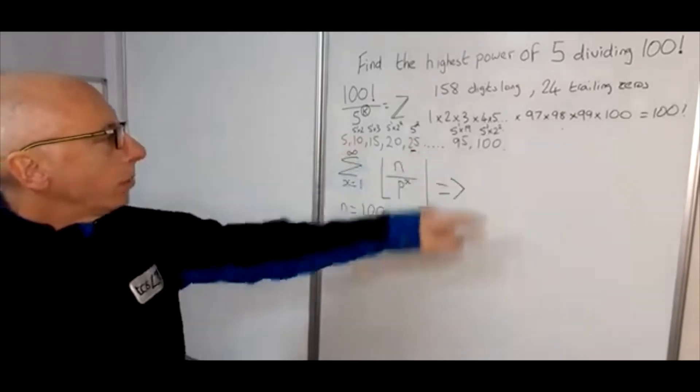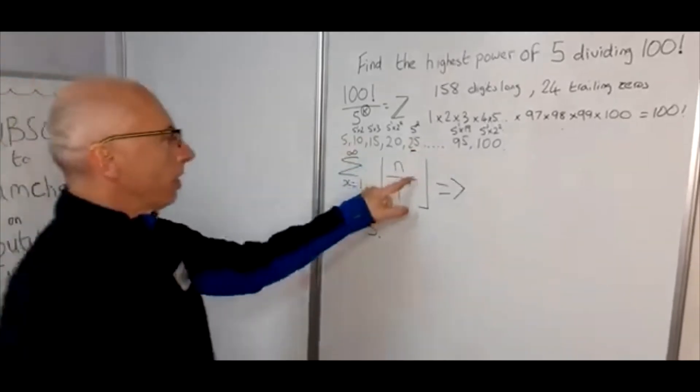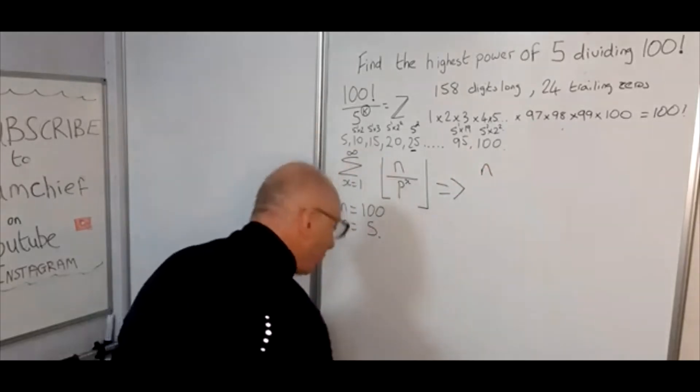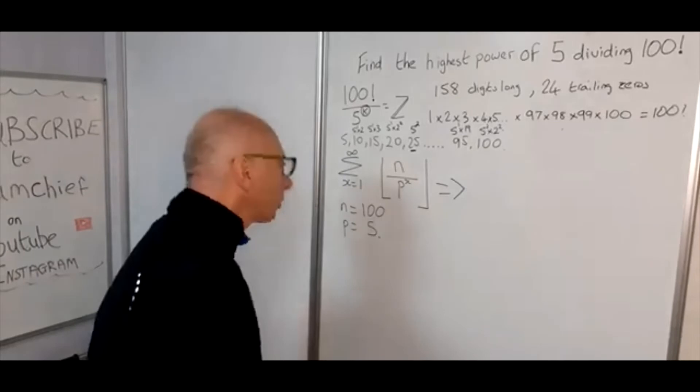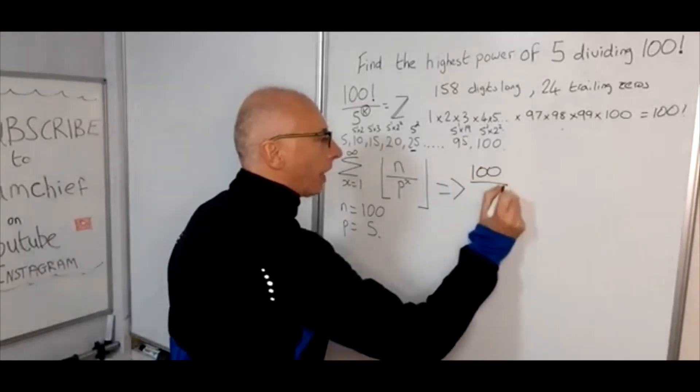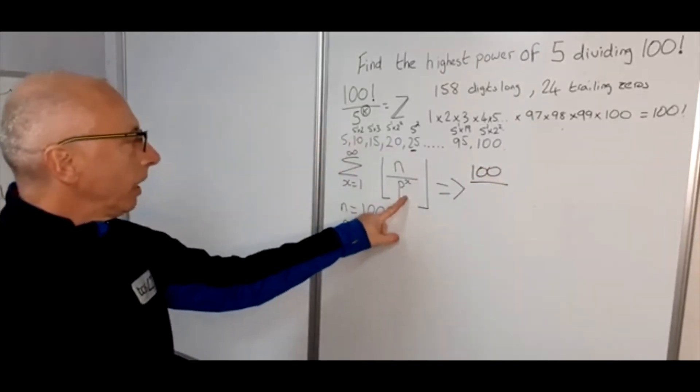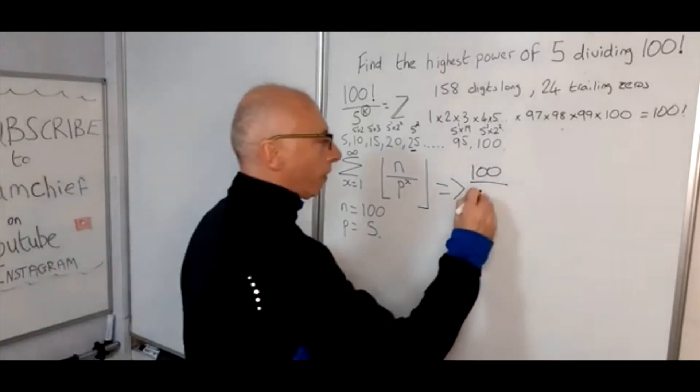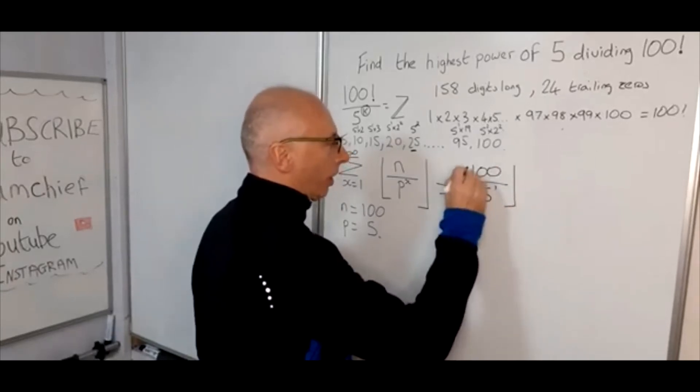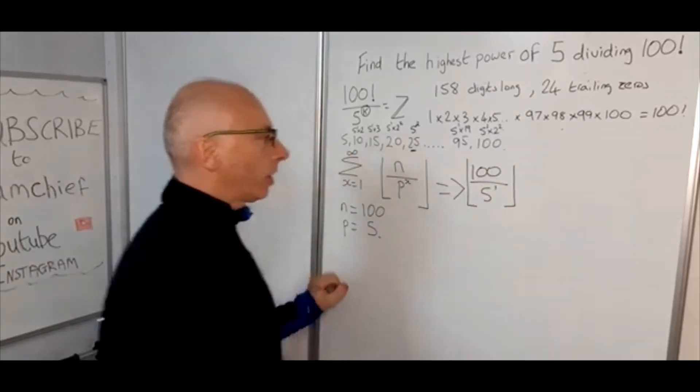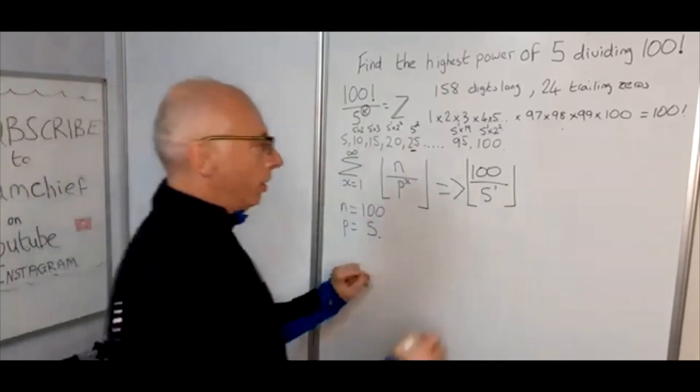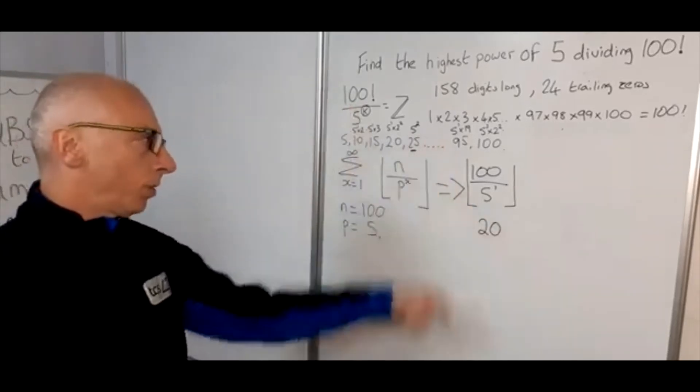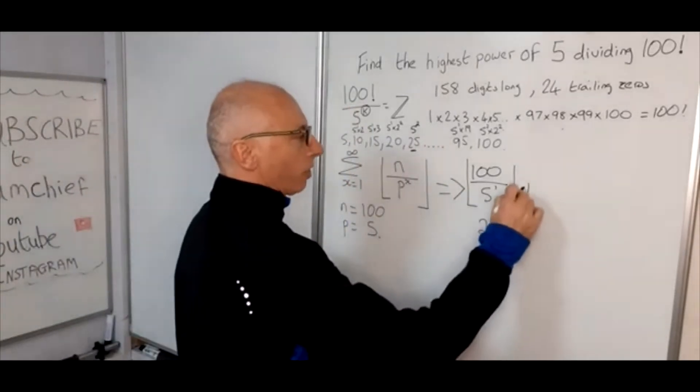So looking at this number here, our first one is n. So we just change the n to 100, so our n is 100. So I'll type in 100. And then we divide that by p to the power of 1, that's the first one in here, and p is 5. So 5 to the power of 1, and that's a floor function. So 100 divided by 5 to the power of 1, I'll just write that down here. That is 20. 5 times 20 is 100. Pretty straightforward.